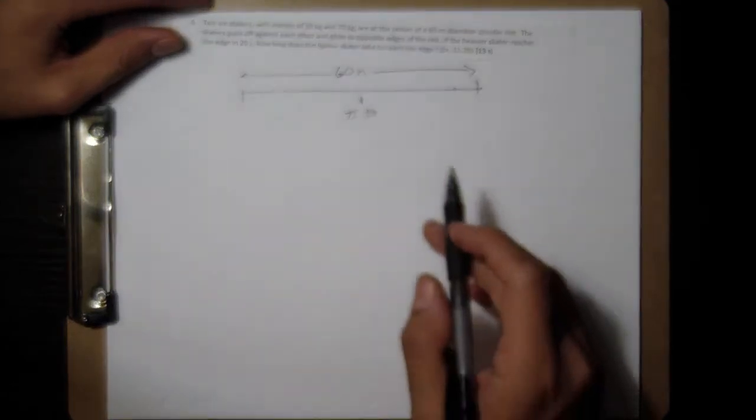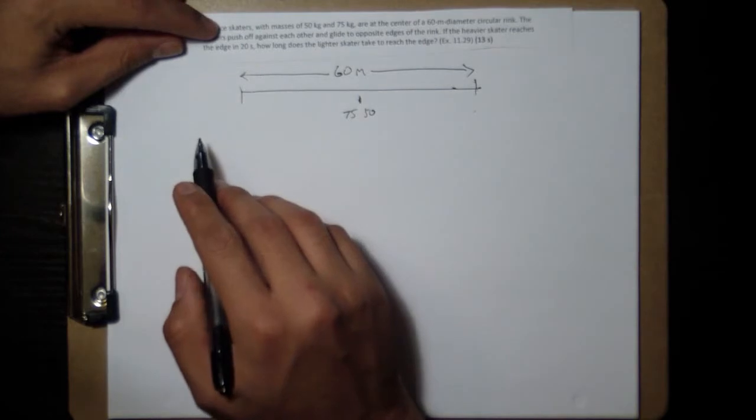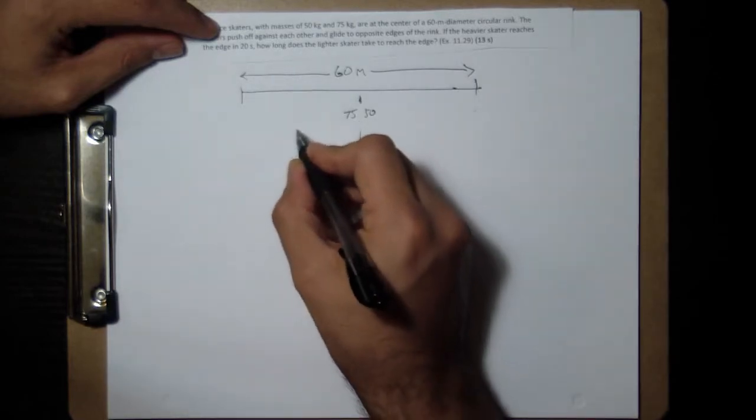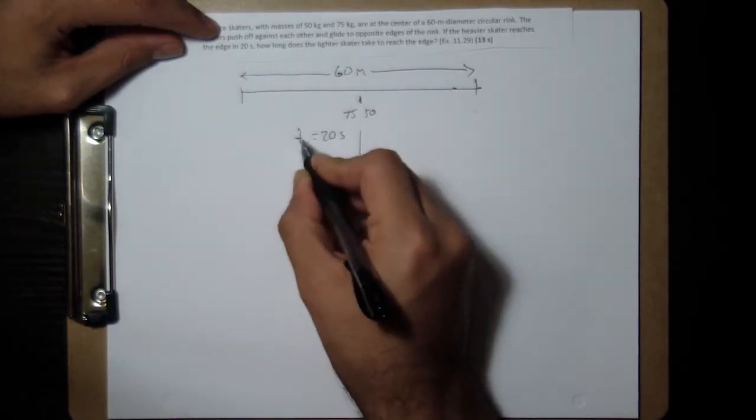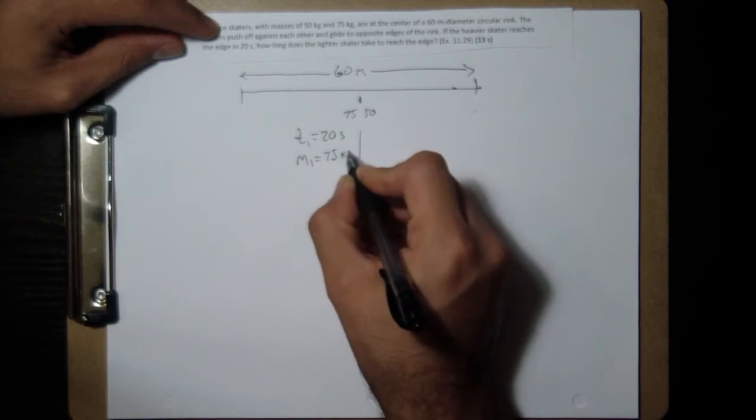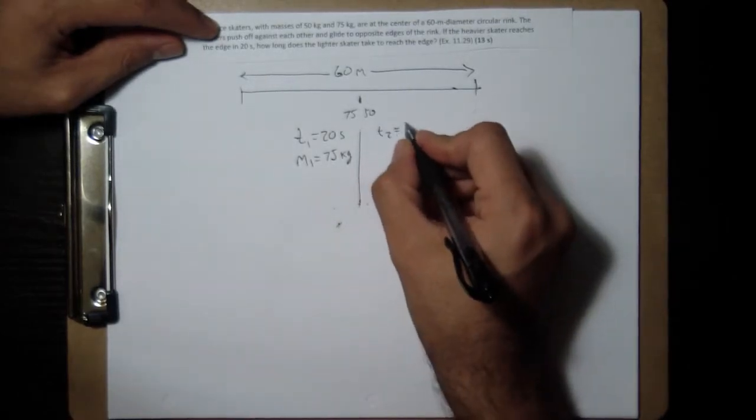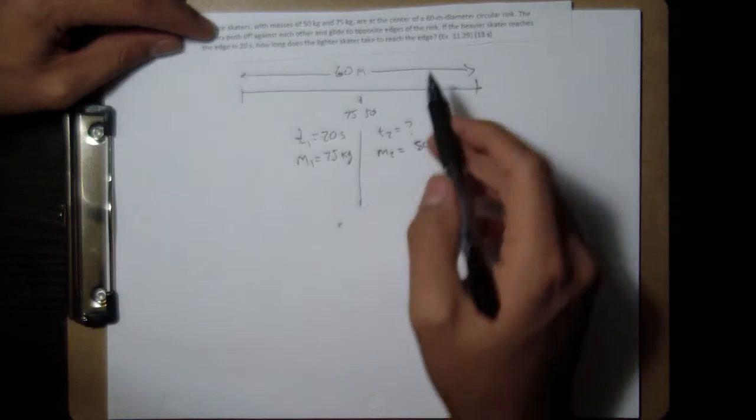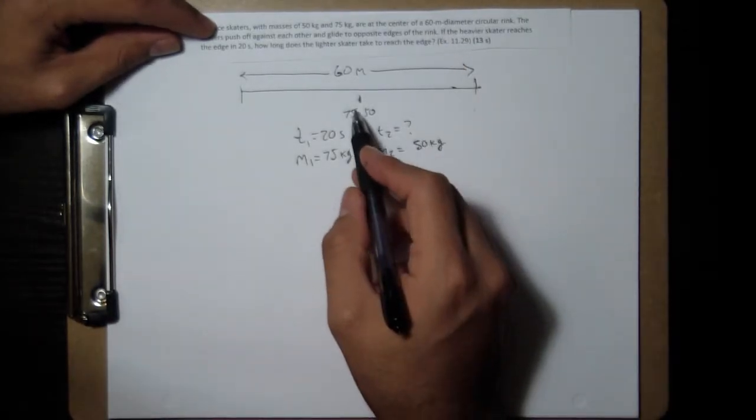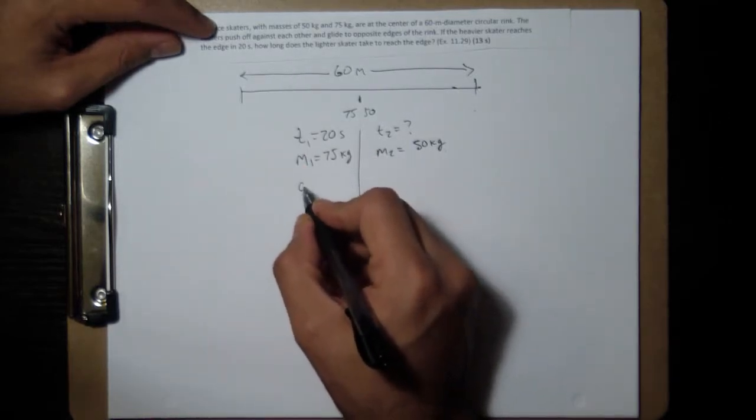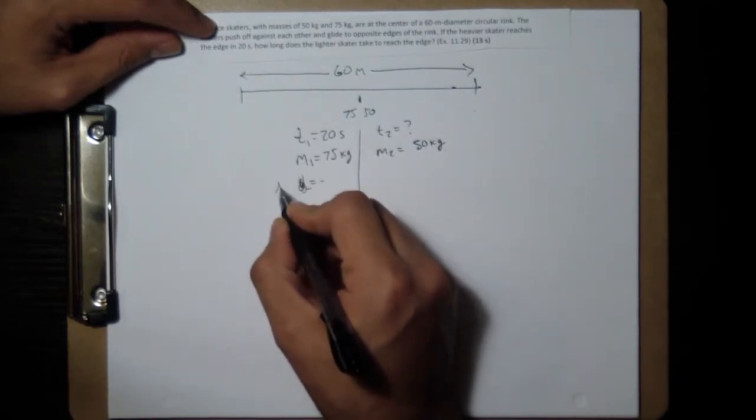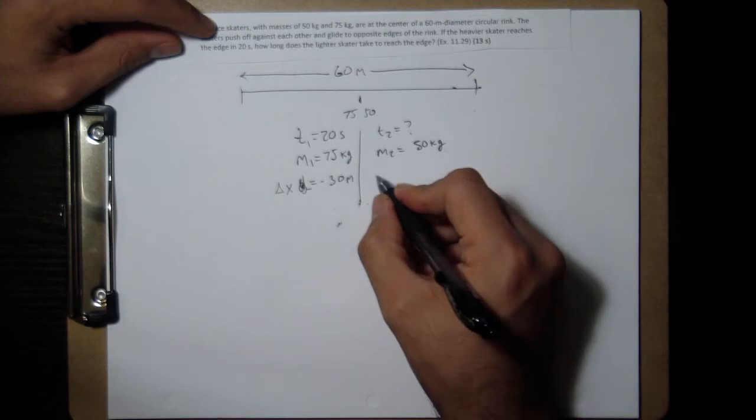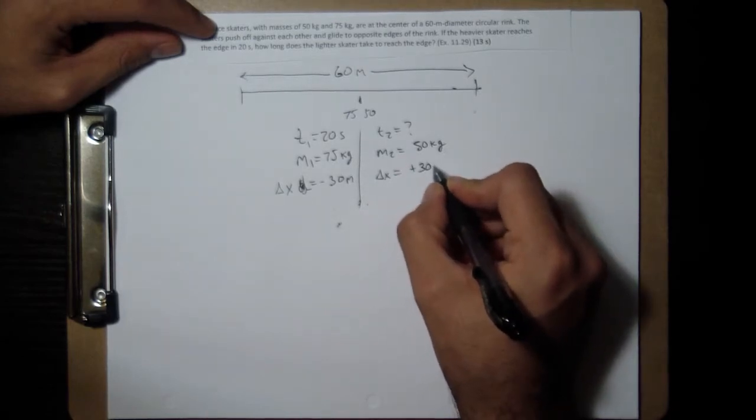Let's look at the kinematics. I'm going to call t1 equals 20 seconds, mass 1 equals 75 kilograms, t2 is what we're looking for, mass 2 is 50 kilograms. They're both going to travel—this guy travels negative delta x equals negative, sorry not 60, 30 right, half of that. 30 meters. And this one's going to travel a positive 30 meters to the right.